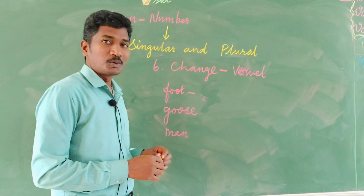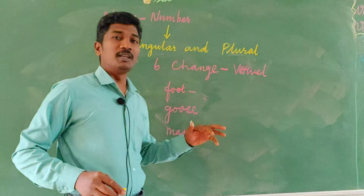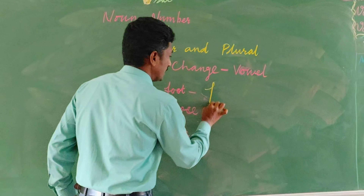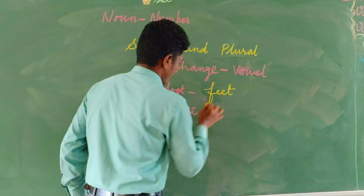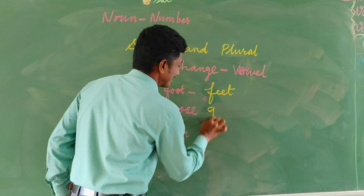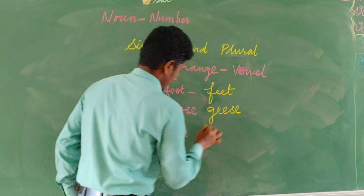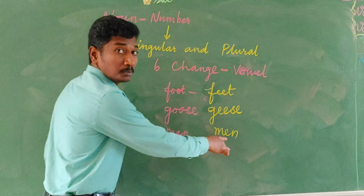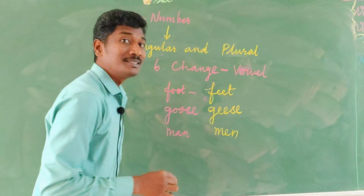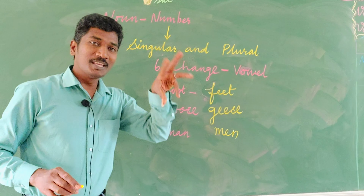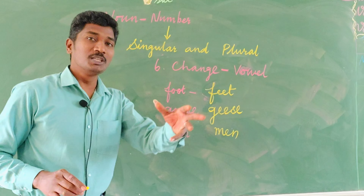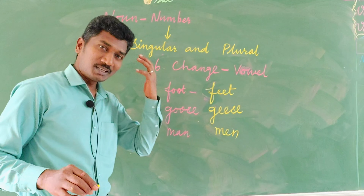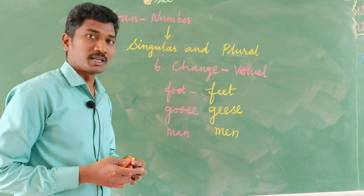Here is another rule — it is very simple: change the vowel. If we change the vowel, they become plural. For example, foot → feet, goose → geese, man → men, woman → women. Just changing the vowel and they become the plural. These certain things we have to keep in mind so we will not forget.